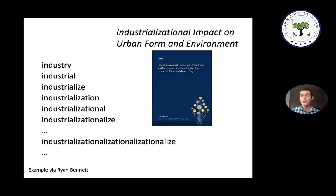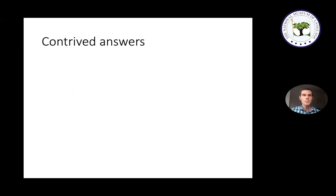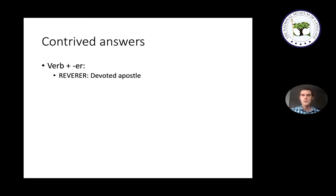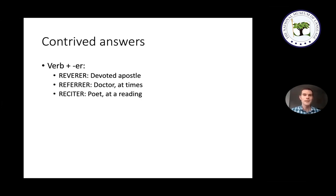For veteran crossword solvers, this process of stacking suffixes might remind you of certain contrived answers you occasionally see in crosswords. One type is a random verb plus the suffix '-er': words like 'reverer' meaning one who reveres, 'referrer' meaning one who refers, or 'reciter' meaning one who recites — all of which have shown up in crossword puzzles.